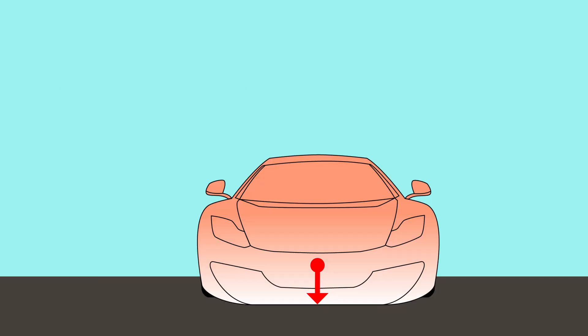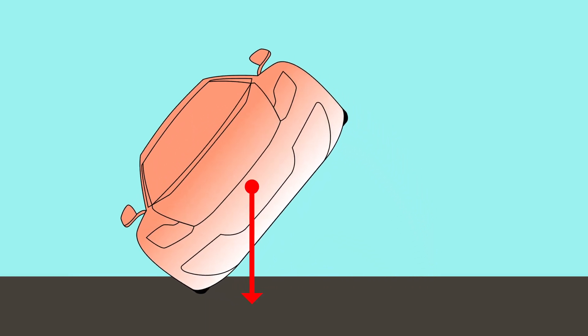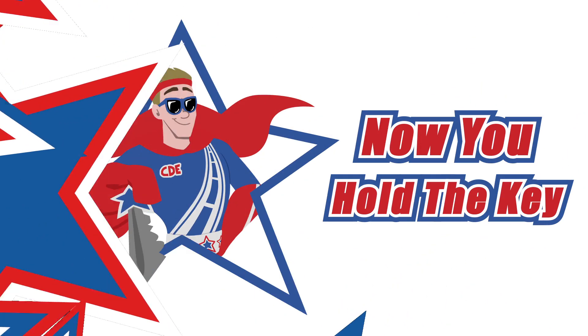On the other hand, smaller vehicles, such as sports vehicles, are closer to the ground. Thus, they have a lower center of gravity, giving them better handling on curves.